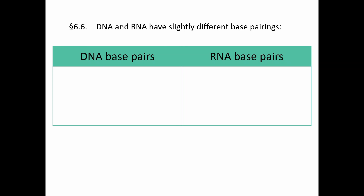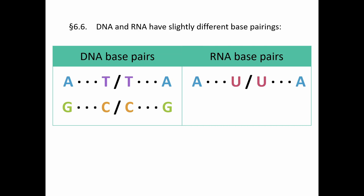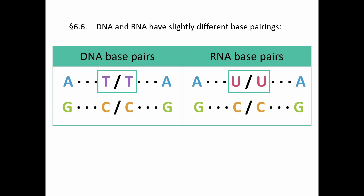There are some slight differences between DNA and RNA in terms of base pairing. In DNA, A pairs with T and G pairs with C. In RNA, thymine is replaced by uracil, so A pairs with U and U pairs with A, while G and C stay the same. Anywhere you see a thymine in DNA, replace it with uracil when going to RNA.